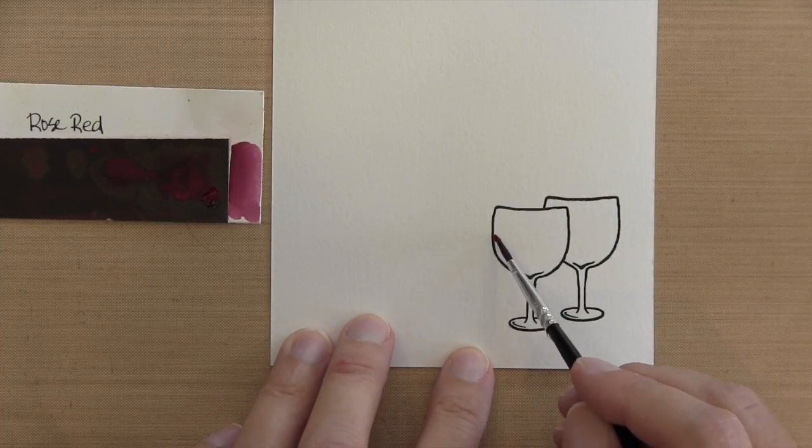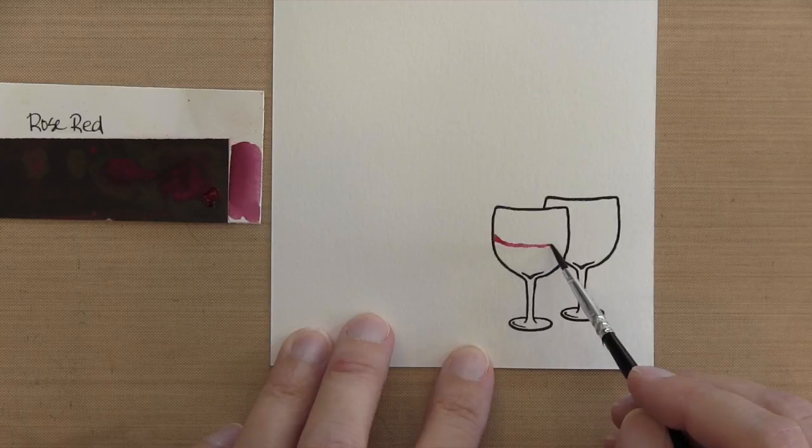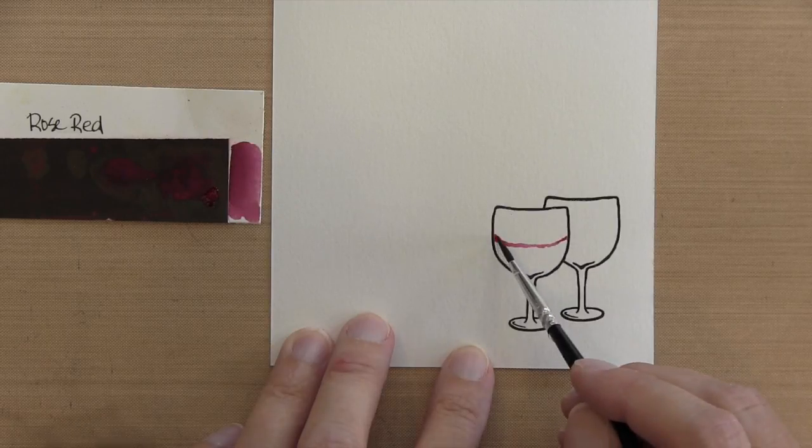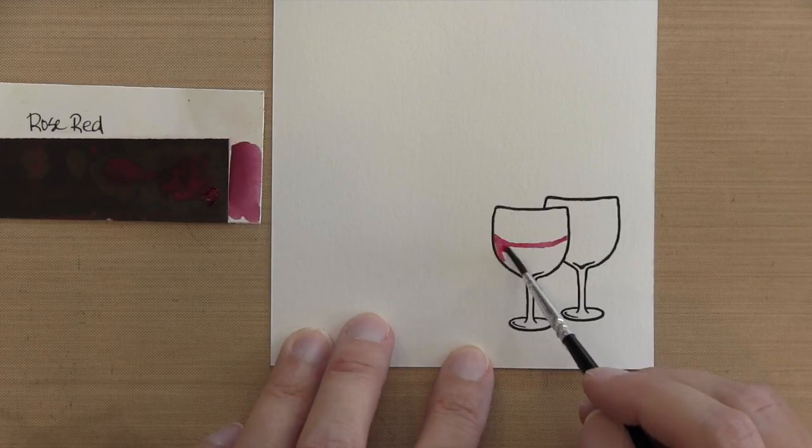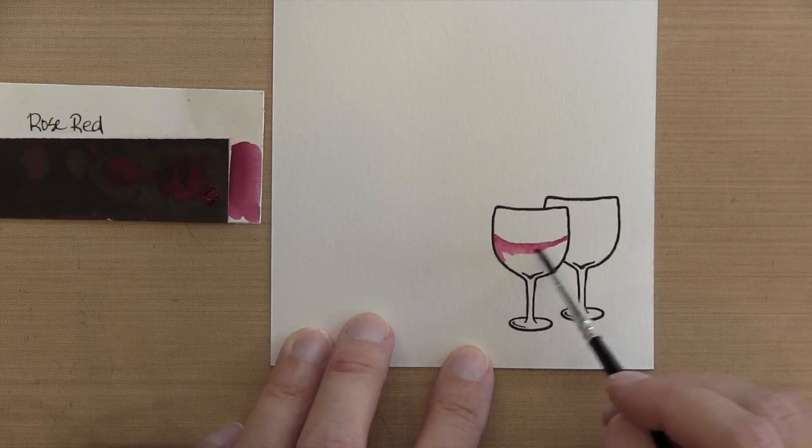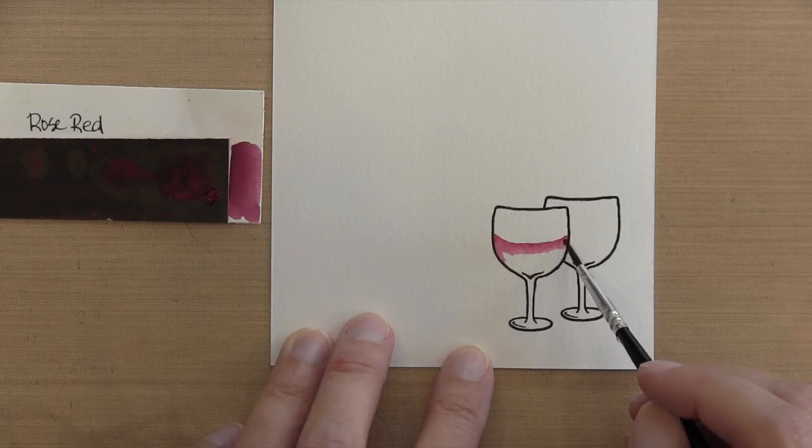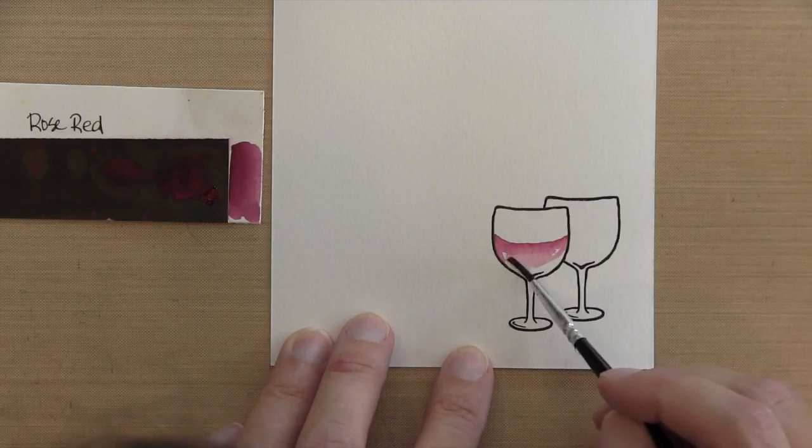There's a stamp in the set to actually stamp the wine if you want to do that. But I'm going to watercolor mine with this number two brush. And I'm using rose red. I did not wet my cardstock beforehand. And I kind of wish that I did. I'm going to do it on the next one.